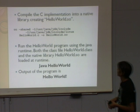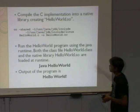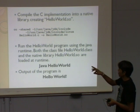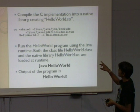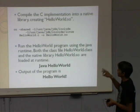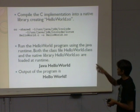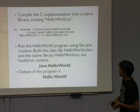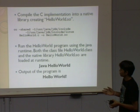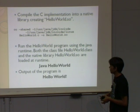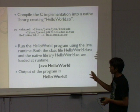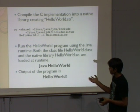We have to create a shared library — HelloWorld.so. The command is: cc -shared -I, include the JDK library and Linux libraries, pass HelloWorld.c, and -o HelloWorld.so (minus O represents the output file). Then we run the program using the Java interpreter, and the program will print Hello World.